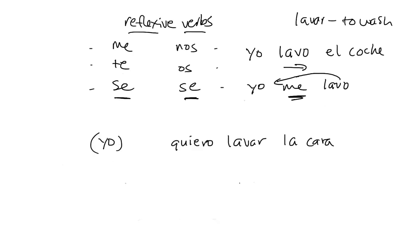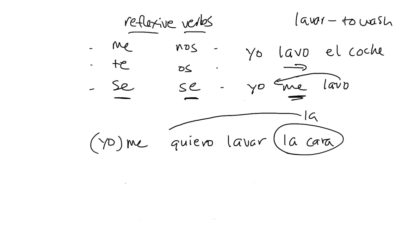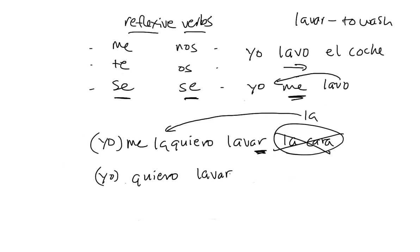If we have two verbs working together, as we had before, and you want to say that you want to wash your face — la cara — it's going to be the direct object pronoun la. But again, you're washing your own face, so you need the reflexive pronoun. You can put these before the conjugated verb: yo me la quiero lavar, and la cara vanishes. Or, since we have an unconjugated verb, you could put them on the end: yo quiero lavármela.